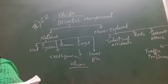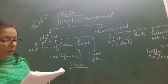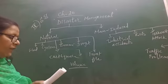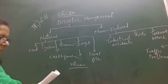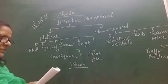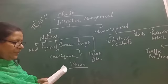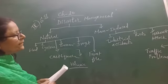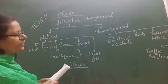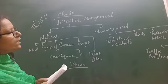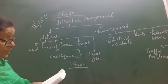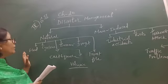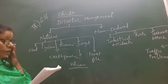The second category is man-induced disasters, which include fire, industrial accidents, bomb explosions, riots, terrorist attacks, and traffic problems. These are all known as man-induced disasters. Today we talk about natural disasters — specifically, flood.